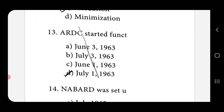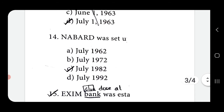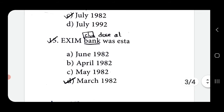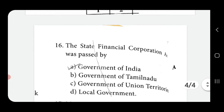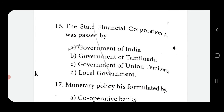Thirteen, ARDC started functioning from July 1, 1963. NABARD was set up on July 1, 1982. Ex-Im Bank was established on March 1, 1982. The State Financial Corporation Act was passed by the Government of India.